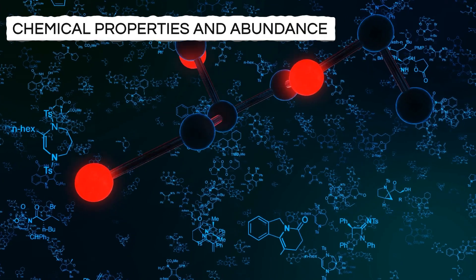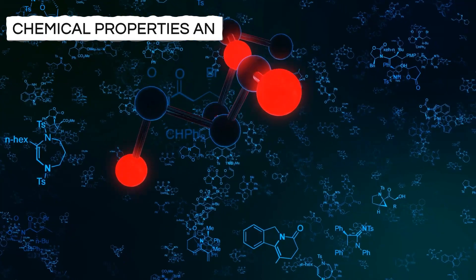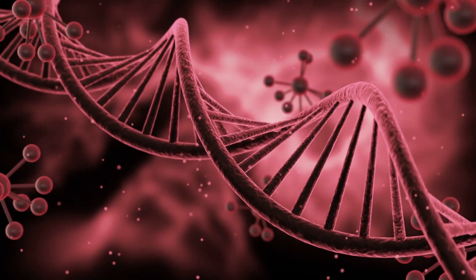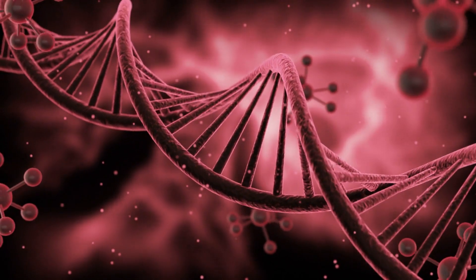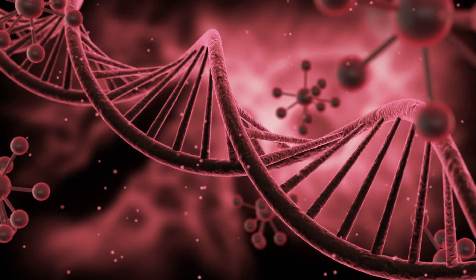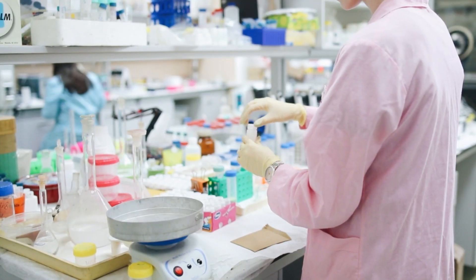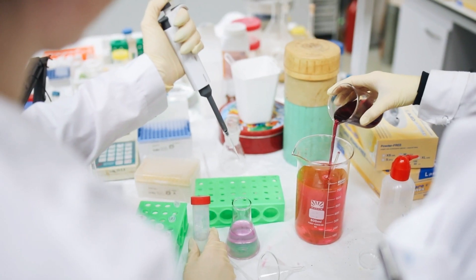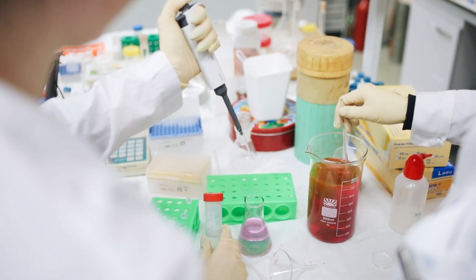When we narrow down the elements based on their chemical properties and abundance, we are left with carbon, nitrogen, and silicon. However, if we further refine the selection by considering the ability to form strong single bonds and create a sturdy molecular backbone, carbon emerges as the clear winner. It possesses the ideal combination of abundance, the capacity to form complex structures, and stable bonds with other carbon atoms.